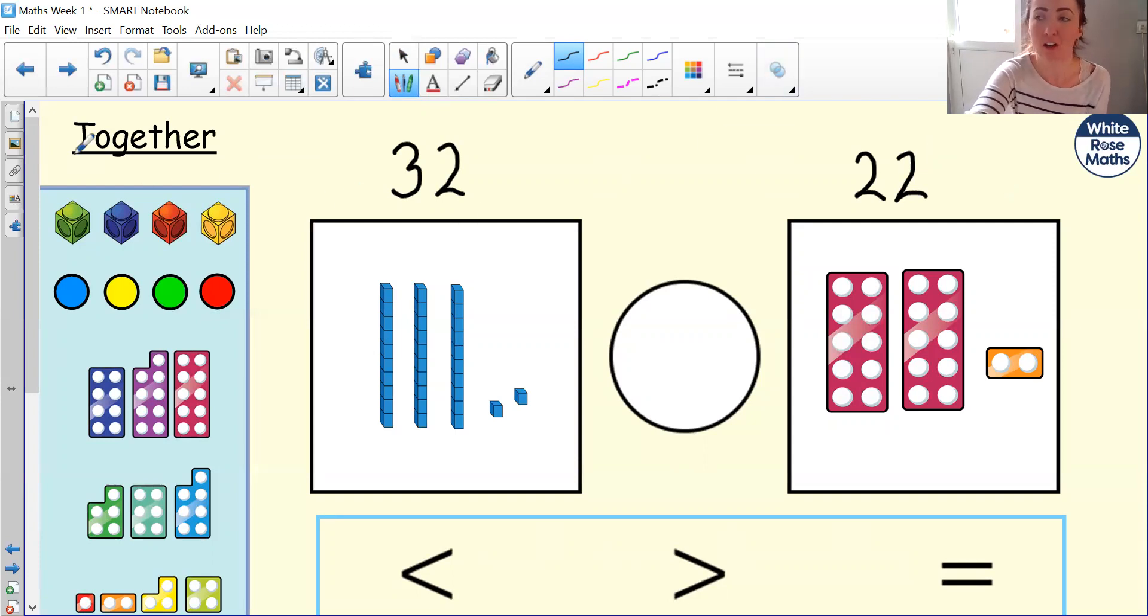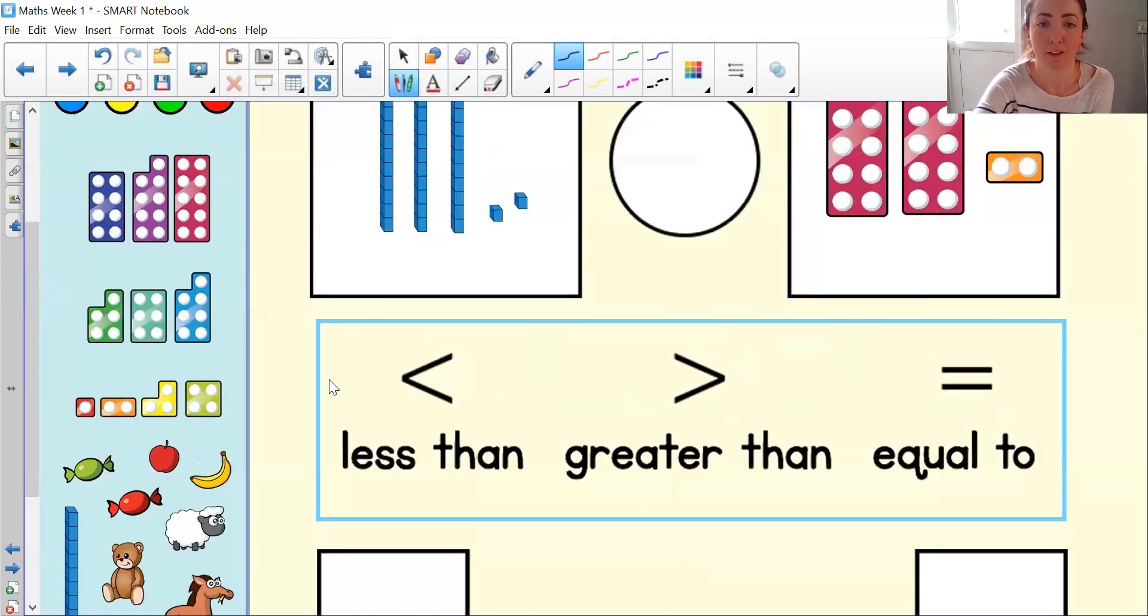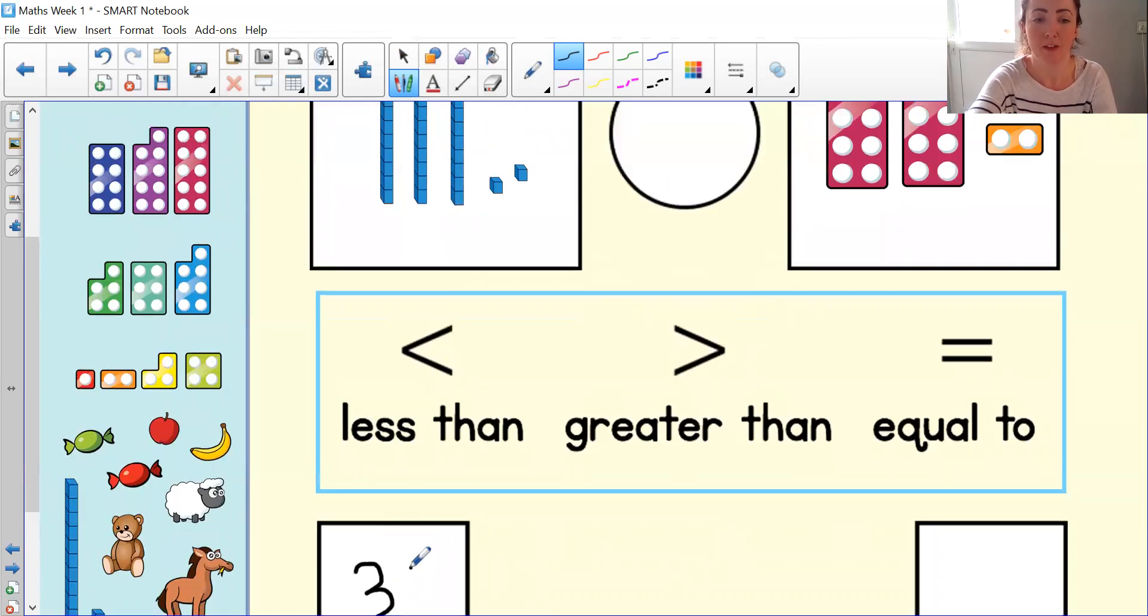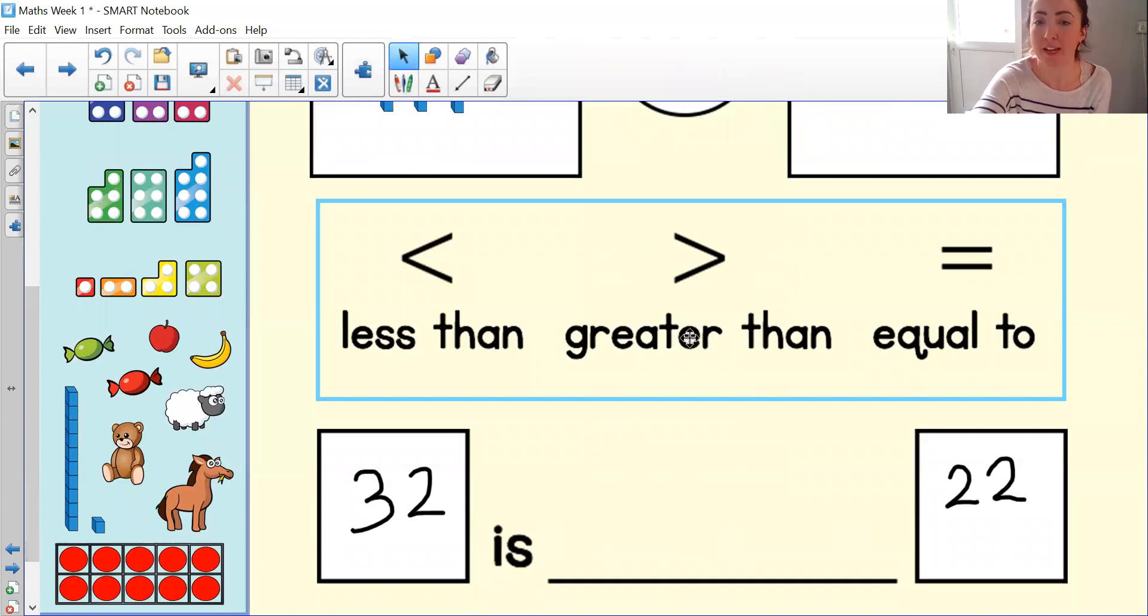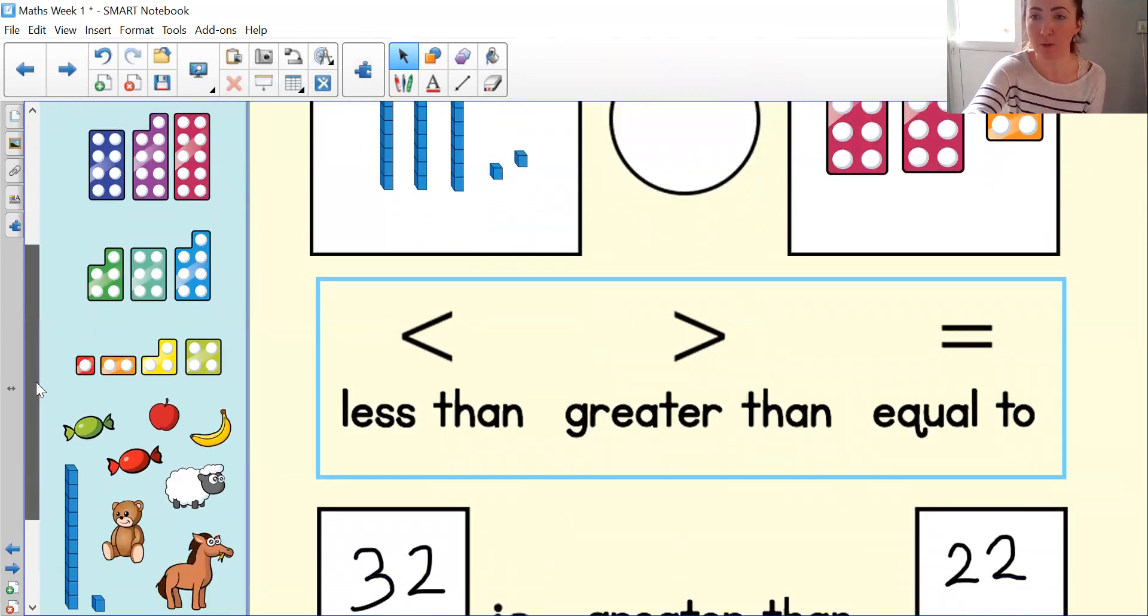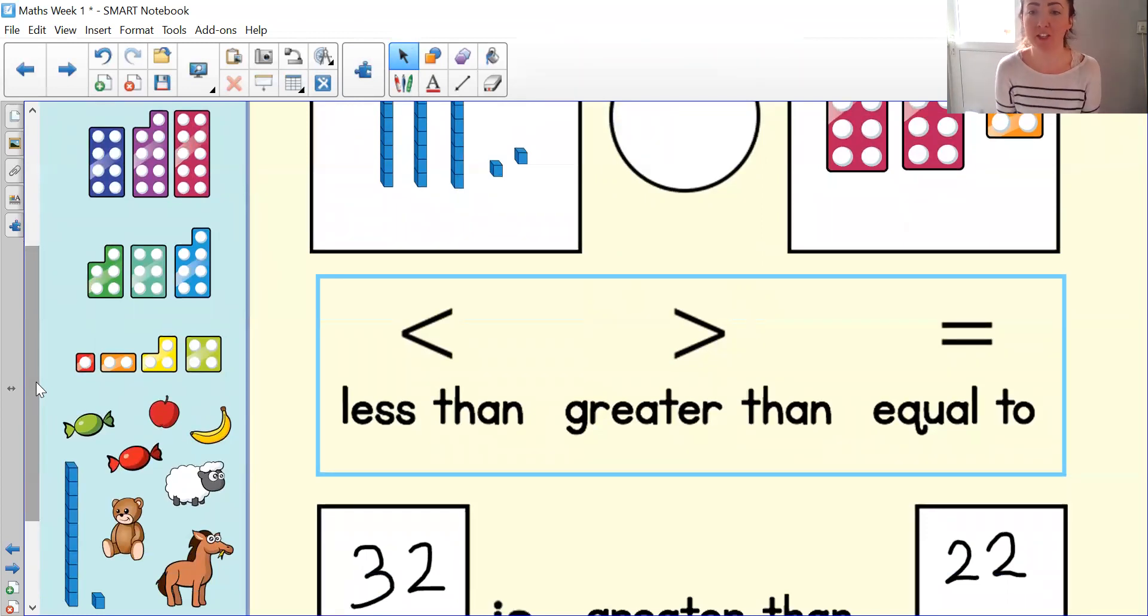Now what we need to do is have a look at our two representations and decide which group is more and which group is less. Pause the screen here to work that out. We're comparing 32 with 22. Did you say that 32 is greater than 22? Well done if you did. Now can you explain how you know? Think about what we talked about before, about tens and ones. How do you know that 32 is greater than 22? Pause here to explain your reasoning.